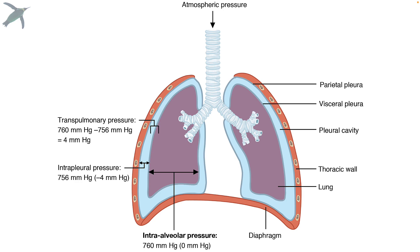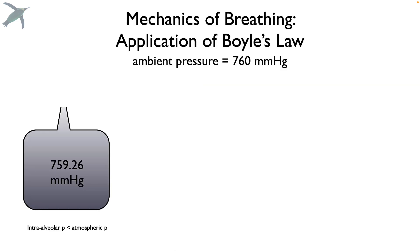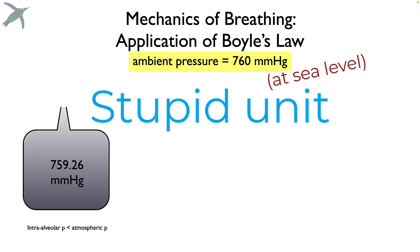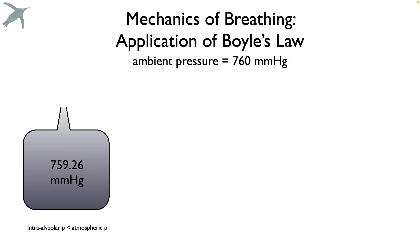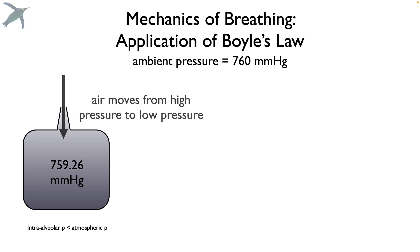What we care about is the pressure in the lungs compared to the pressure in the atmosphere — the air we're breathing. There are three options. Ambient pressure at sea level is 760 millimeters of mercury. If the pressure in your lungs is less than that, air will move from high pressure to low pressure until equilibrium is reached.